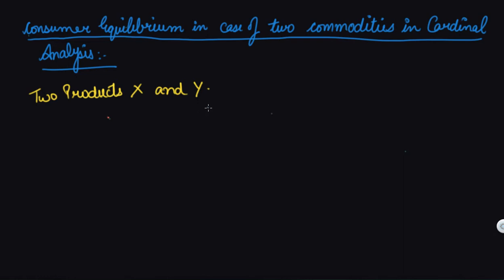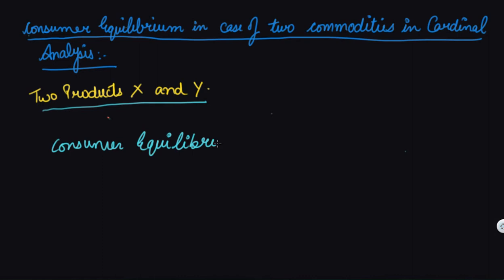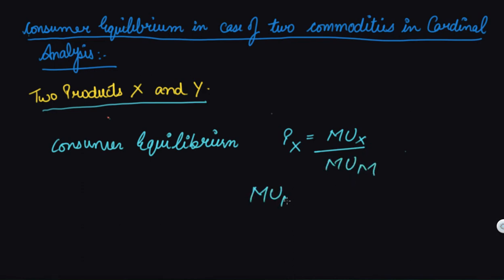In the case of one commodity, the consumer equilibrium is where a consumer gets maximum satisfaction. The equilibrium condition was: price of X equals marginal utility of X divided by marginal utility of money (MU_m), or equivalently, MU_m equals MU_x divided by price of X. This was the equilibrium point in the one-commodity analysis.